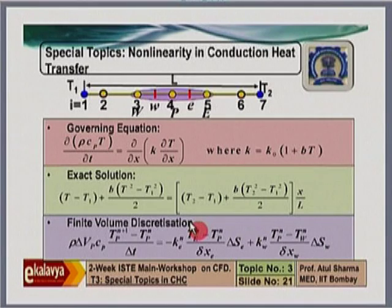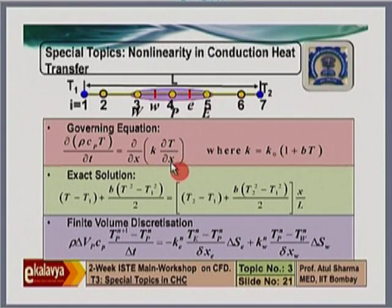Non-linear heat conduction is another special topic. In fluid flow, non-linearity comes from convective terms, but in conduction, non-linearity arises only when conductivity is a function of temperature: k=k(T). When k(T) is multiplied by a temperature gradient, the product makes the governing equation non-linear. The correct governing equation is del/del_x [k(T) * dT/dx] — you cannot write k*d²T/dx² when k depends on temperature.